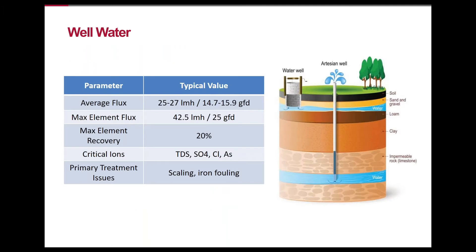Well water is very commonly treated with brackish water RO, or BWRO, since it often has very high TDS, and in some cases it can be impacted by seawater intrusion which further elevates TDS. Well water typically has the lowest organic content and fouling potential of the brackish water types, so well systems are designed with a relatively high average flux and recovery. Region and geology have a big impact on treatment goals. The major treatment concerns are scaling and iron fouling.